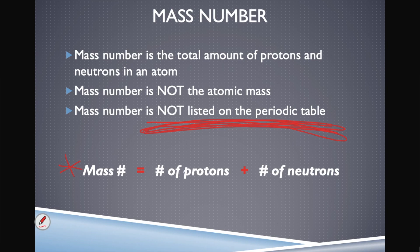For example, hydrogen's atomic mass is 1.01 — that's the number on the periodic table. That is not the mass number of hydrogen. How do I know? Because the mass number is the sum of protons plus neutrons, and those subatomic particles only come in whole numbers. There's no combination of whole numbers that adds up to 1.01.